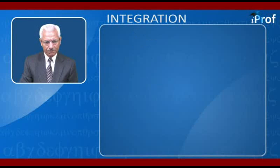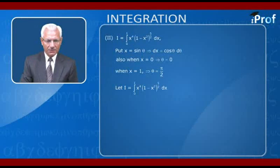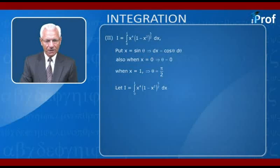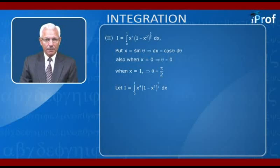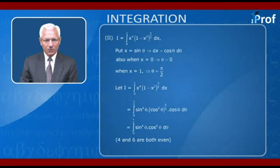Now for the second question: I = ∫₀¹ x⁴(1−x²)^(π/2) dx. We substitute x = sin θ, so dx = cos θ dθ. When x = 0, θ = 0; when x = 1, θ = π/2. The integral becomes ∫₀^(π/2) sin⁴θ · cos^(π) θ · cos θ dθ, which is ∫₀^(π/2) sin⁴θ · cos^(1+π/2)... simplifying using the given formula with m=4 and n=6 (both even).